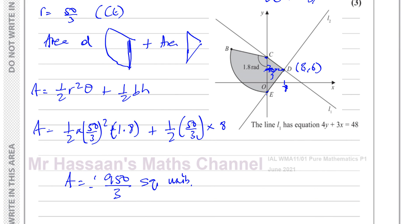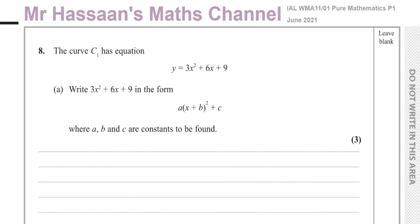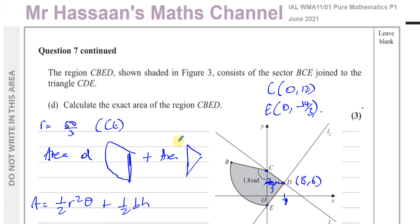That's all the question done. Other questions from this paper can be found in the playlist in this section. Other questions on straight line graphs and radian measure will be in the relevant playlists. You can subscribe to my channel by clicking the link, and you can find other papers — P2, P3, P4, S1, M1, IGCSE — in the description below this video. Thank you for watching, and see you soon.